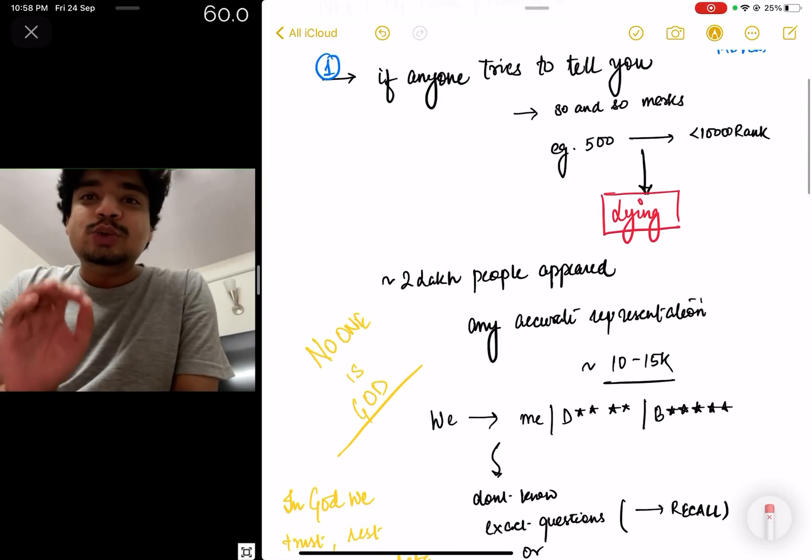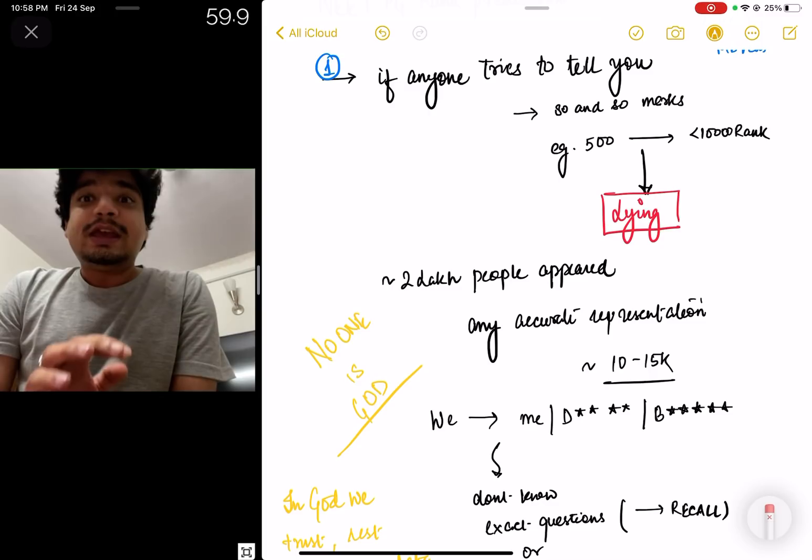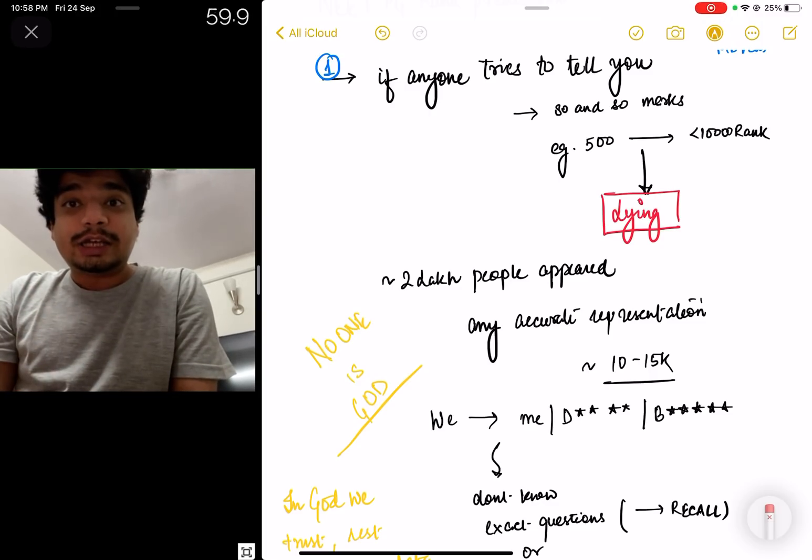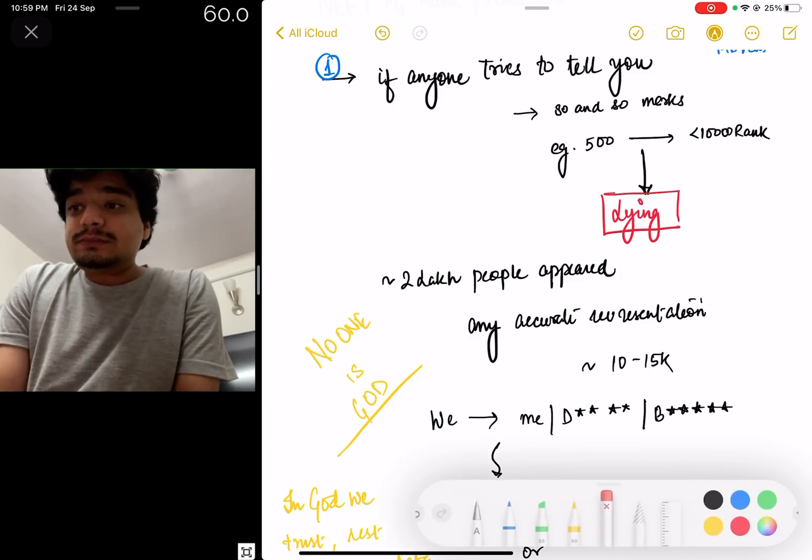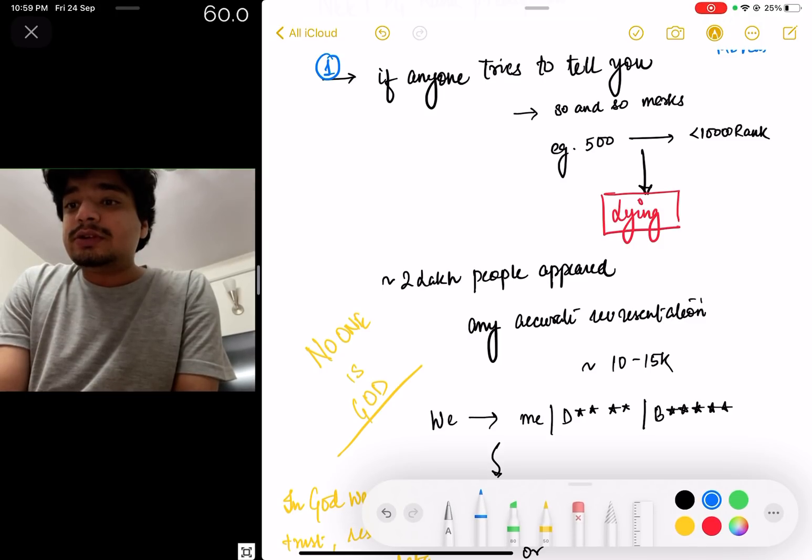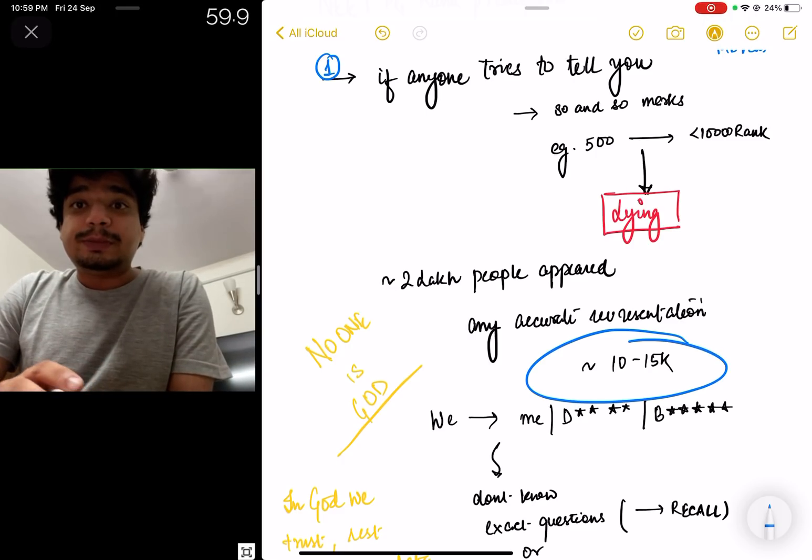There's absolutely no way you can actually predict the rank of a person before the actual rank arrives. Why? I can tell you. More than 2 million people, close to 2 million people appeared for this entrance examination. In order to reasonably gauge what rank, what marks, which rank comes, you should have a survey of at least 10,000 to 15,000 people.